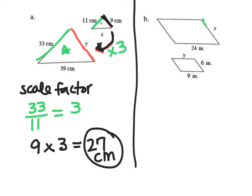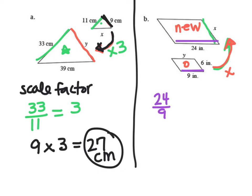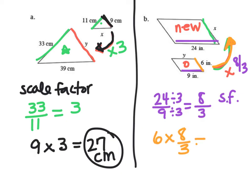Now let's find x in this picture. I'm going from small to big, so my scale factor will be greater than 1. First I find the scale factor using two known sides: the new side is 24 and that matches up with 9, so 24 over 9. Simplifying by dividing by 3: 24/3 is 8 and 9/3 is 3, giving a scale factor of 8/3. Now to find x: 6 times 8/3 — putting a 1 under the 6: 6 times 8 is 48, over 1 times 3, which is 3. 48 divided by 3 is 16. So x equals 16 inches.